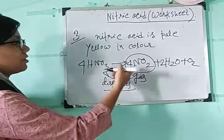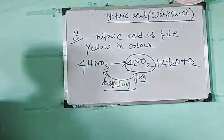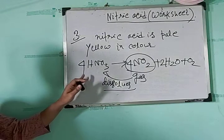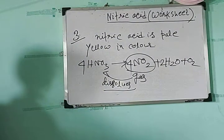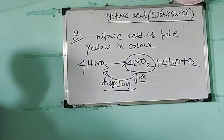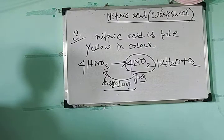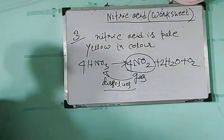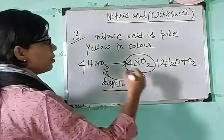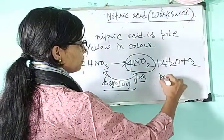In this dissociation, the produced nitrogen dioxide gas dissolves in the undissociated nitric acid, and that is why the nitric acid is pale yellow in color. The pale yellow color of nitric acid comes from its dissolved nitrogen dioxide gas.